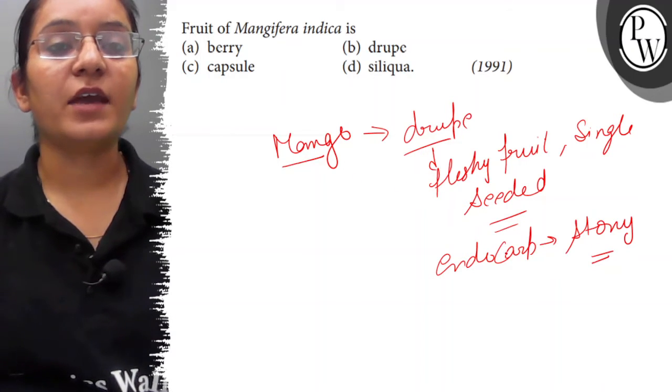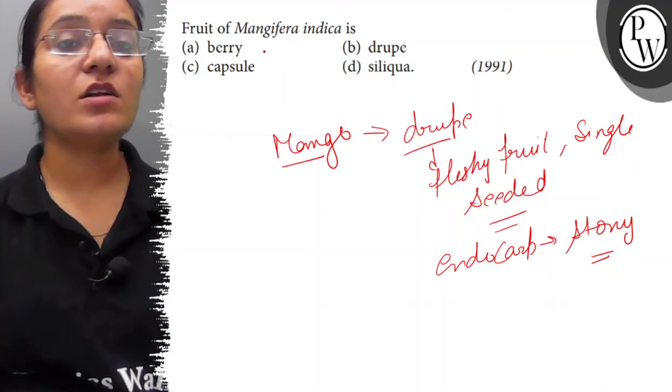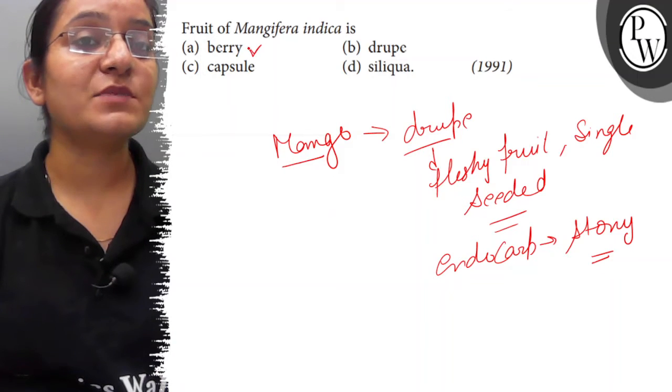It is a drupe type of fruit. Berry is also a fleshy fruit but it has many seeds.